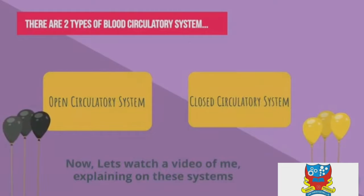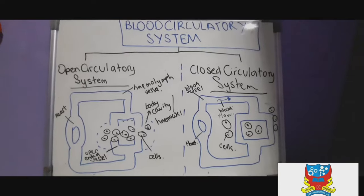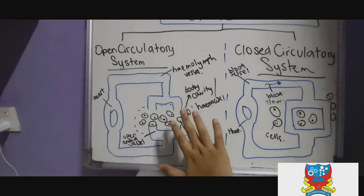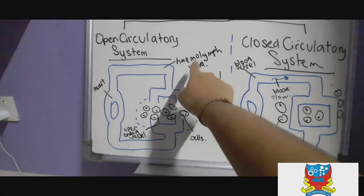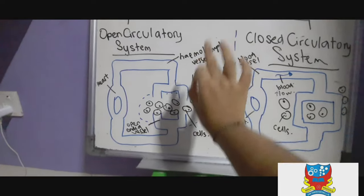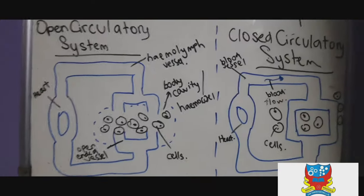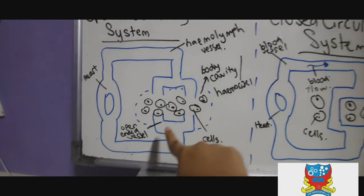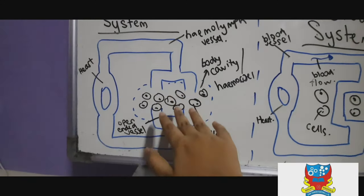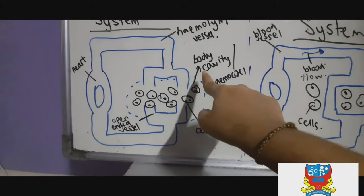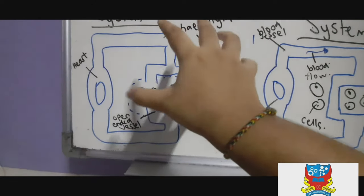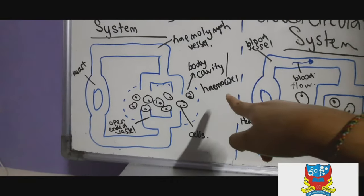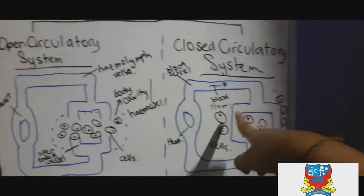In the open circulatory system, haemolymph — the blood-like nutritious fluid found only in insects and molluscs — flows through vessels into an open-ended vessel. The haemolymph bathes the cells directly in the body cavity. The heart pumps haemolymph out into this open body cavity.